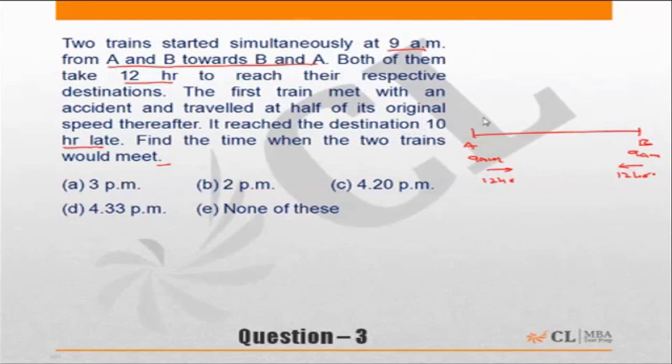However, the first train met with an accident somewhere en route. So accident happened here, let us say. And hence it was delayed by 10 hours. So the train moving in this direction was delayed by 10 hours.